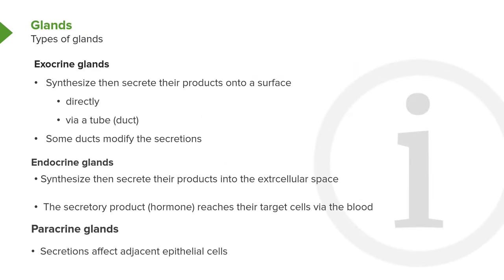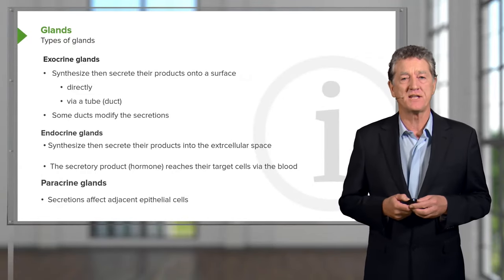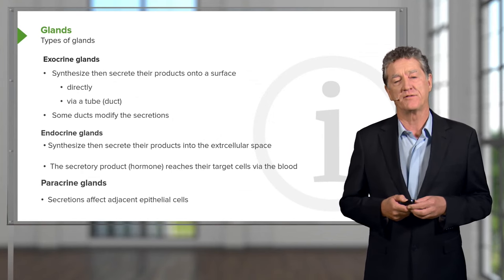There are a number of different types of glands. I'm mainly going to concentrate in today's lecture on the exocrine glands. They're glands that synthesize and then secrete their products onto the surface — either directly, such as we see in goblet cells lining some epithelia, or they secrete their product via a tube called a duct or a conduit. As mentioned, some of these ducts modify the secretion of the glands.